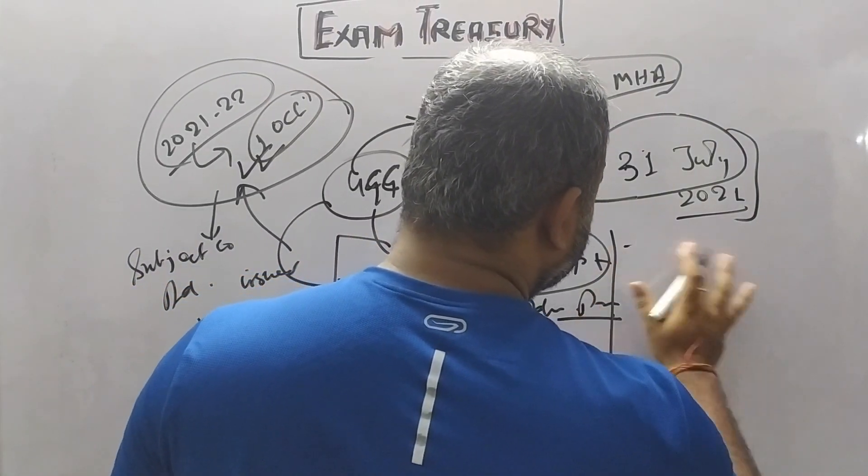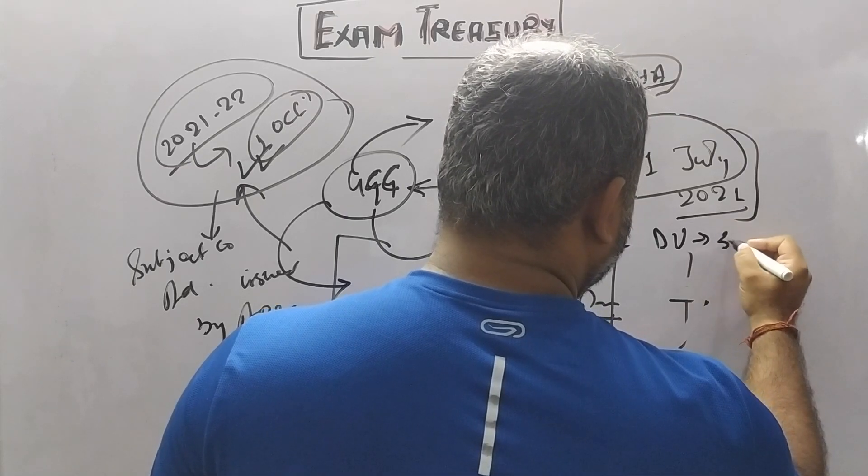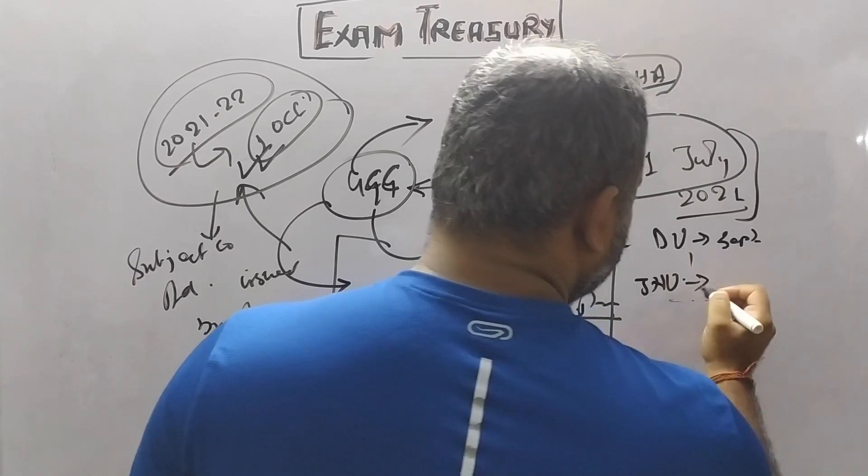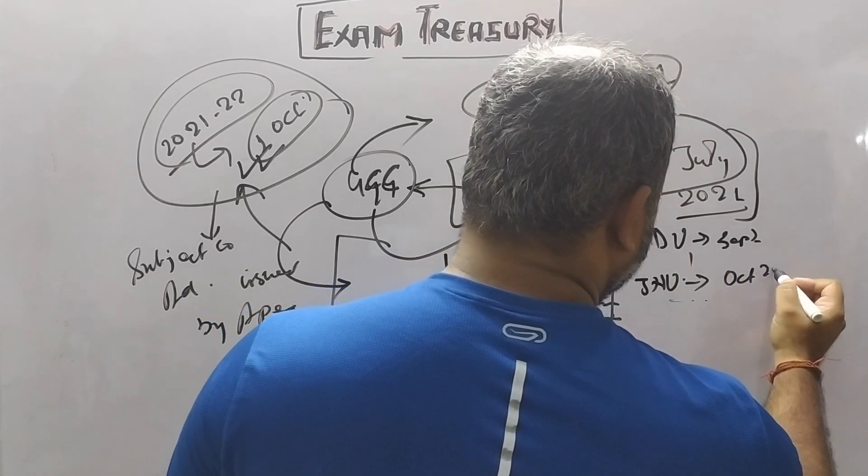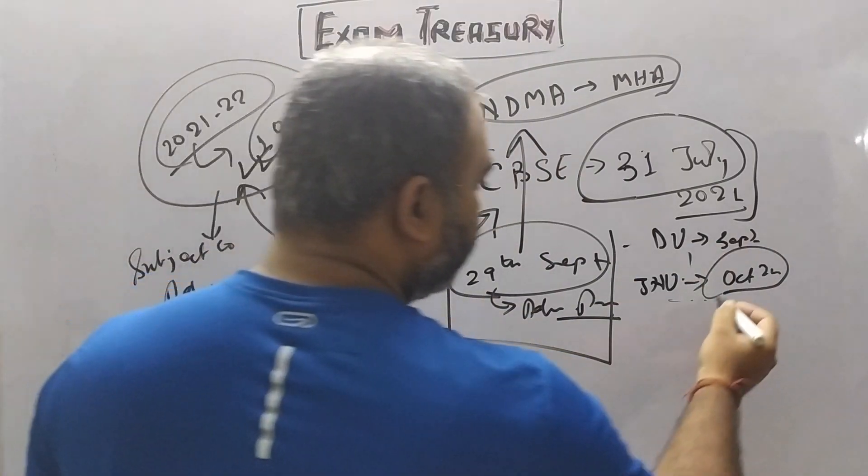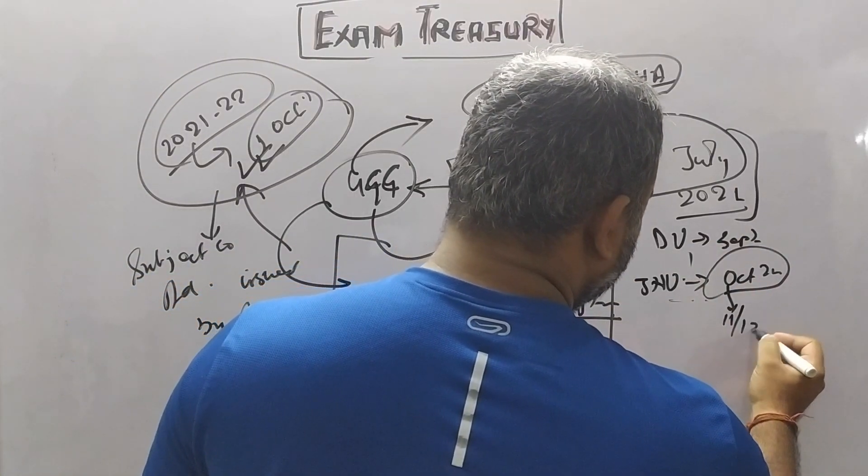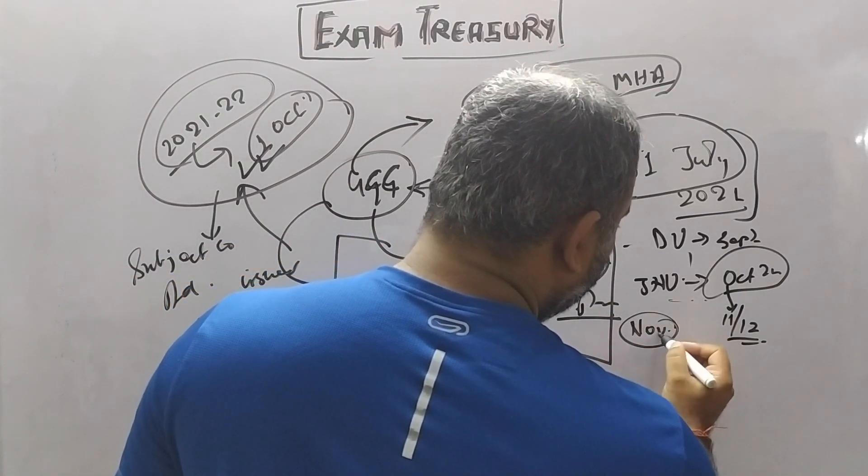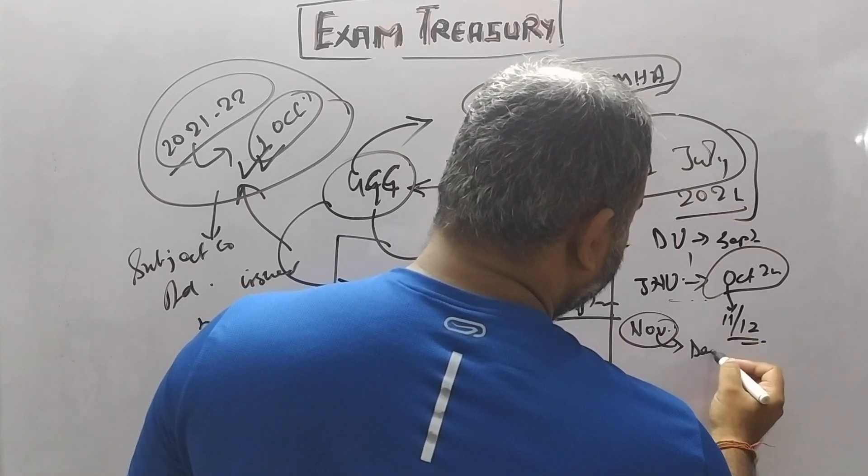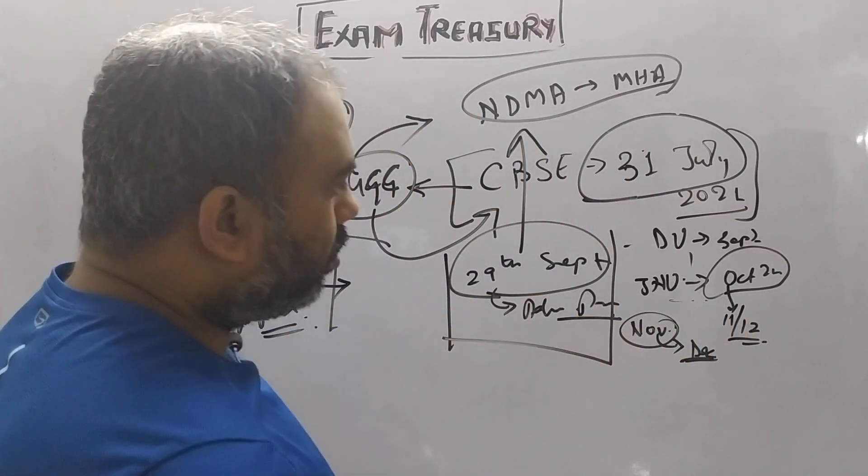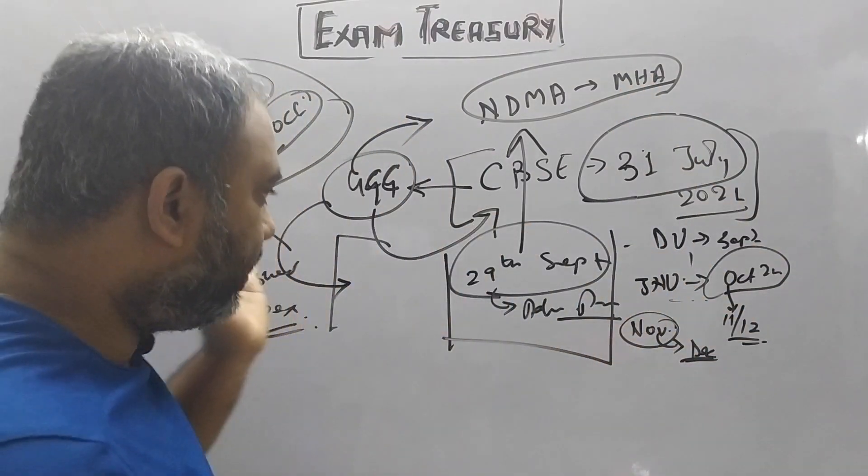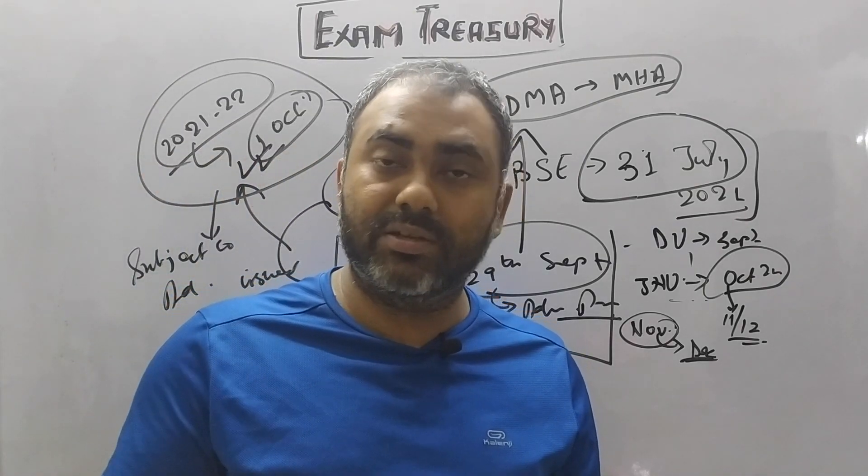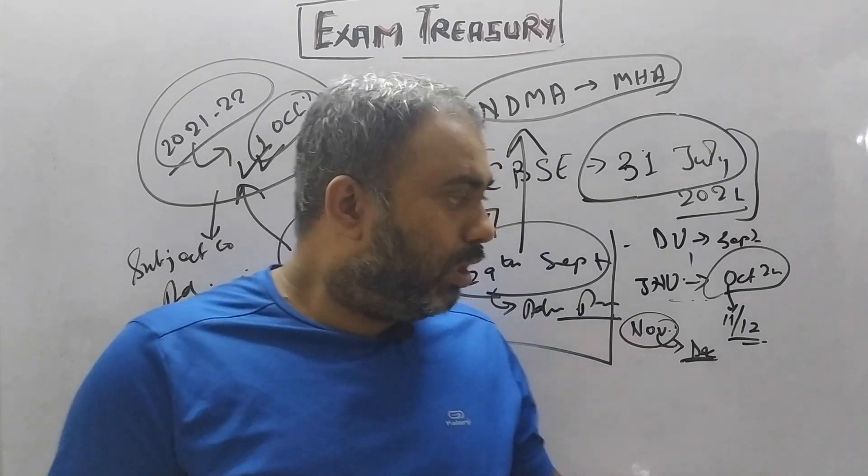But many students don't know what happened last year. If we talk about DU, the exam was in September. If we talk about JNU, the exam was in October, the second week started around October 11 or 12. The whole October passed. Finally, the exam was declared in November and the admission process started in December. This is why I'm telling people who are panicking - don't panic.